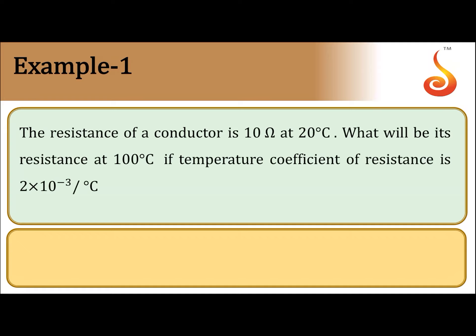Example number 1: the resistance of a conductor is 10 ohm at 20 degree Celsius. What will be its resistance at 100 degree Celsius, if the temperature coefficient of resistance is 2 into 10 to the power minus 3 per degree Celsius?